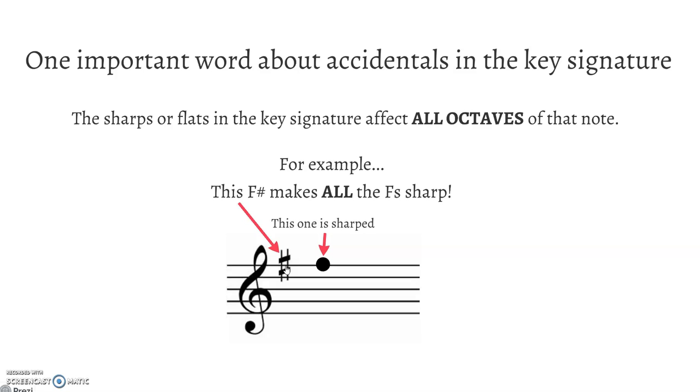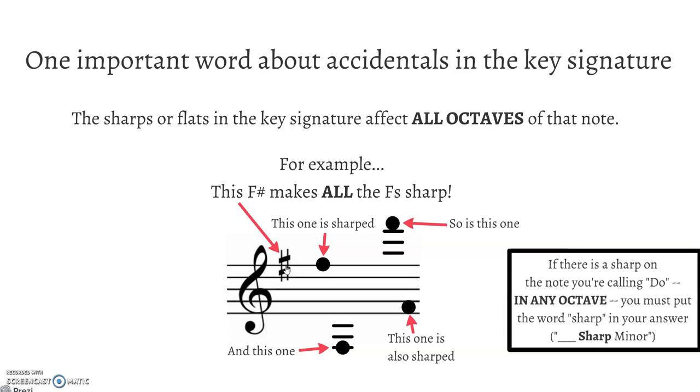So this one is sharped. This is an F, it's sharped. Here's a super high F, it's sharped. Here's a super low F, it's sharped. All of the F's in all the octaves are sharped. So if there's a sharp on the note you're calling Do in any octave, you have to put the word sharp in your answer.